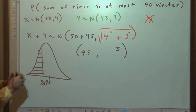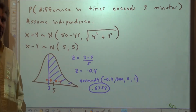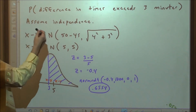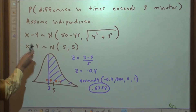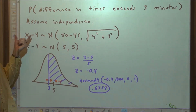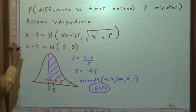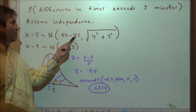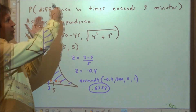Now we move to a slightly more difficult problem: what's the probability that we take one of each time, look at their difference, and the difference exceeds three minutes? We're told to assume independence. The new joint distribution is for the difference of the two times, X minus Y. It makes sense to subtract the smaller mean from the larger, so our new joint distribution has a mean difference of 5 minutes.